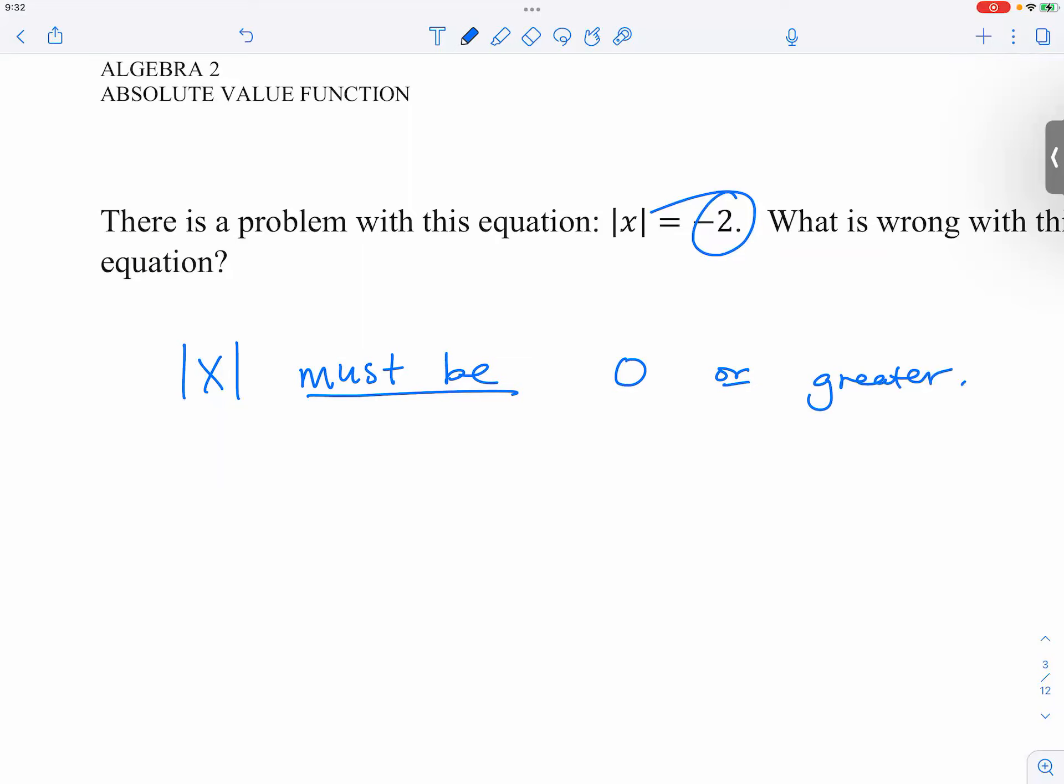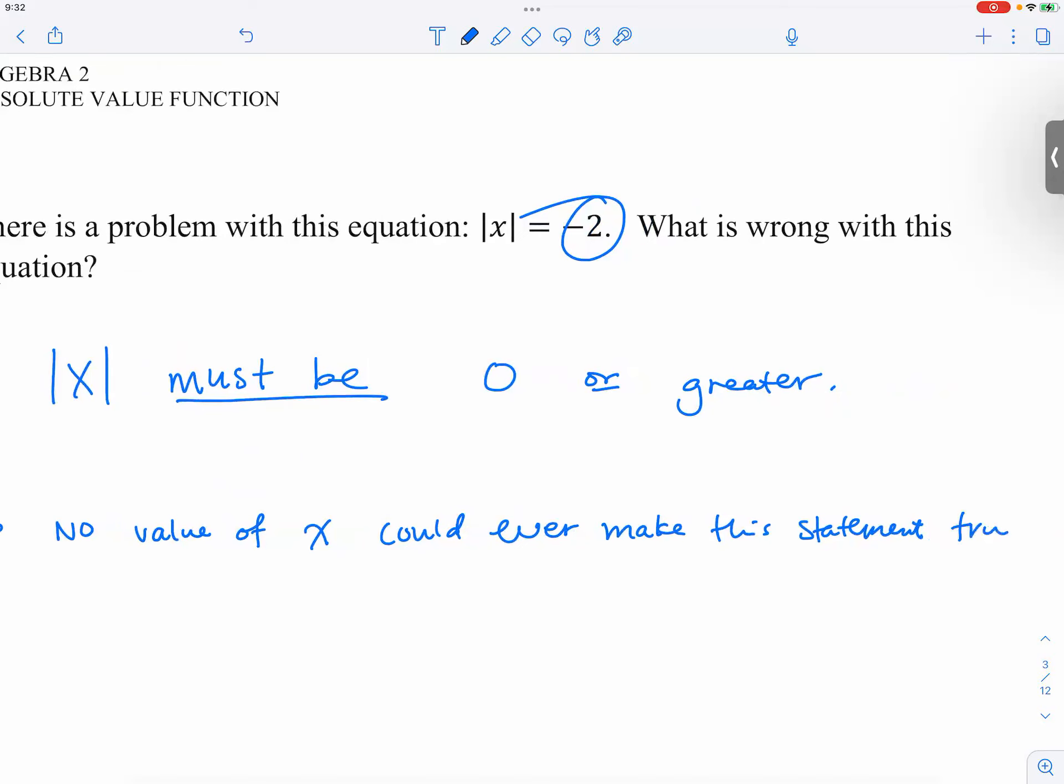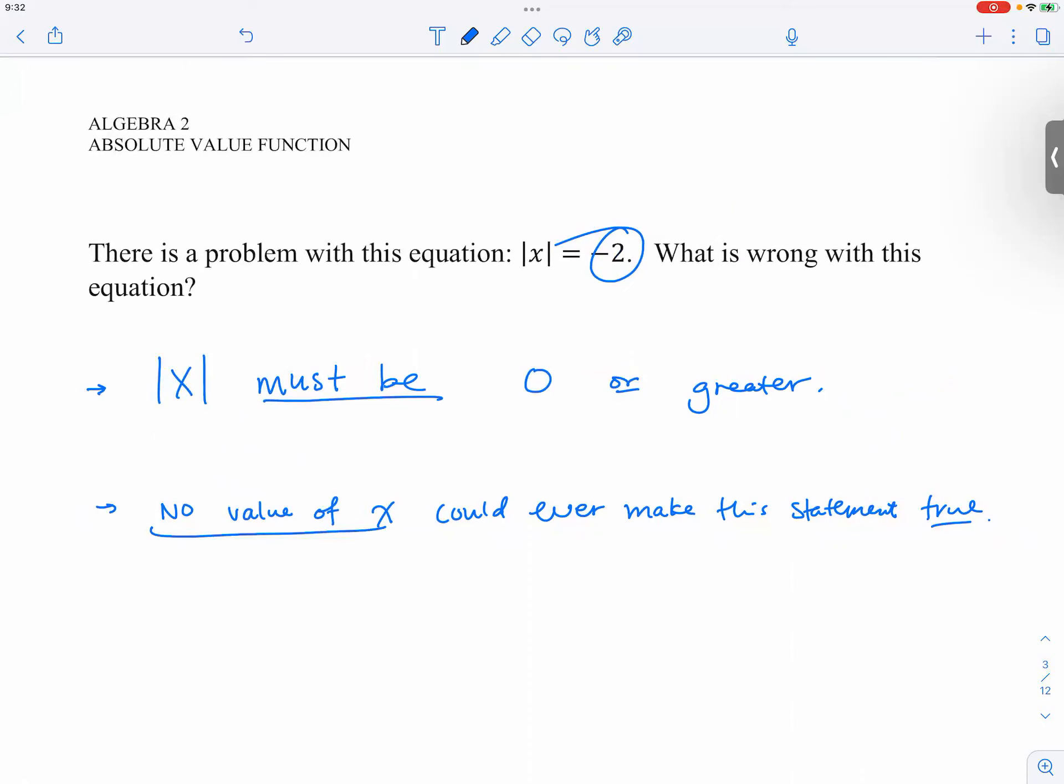Can everyone see why it has to be zero or greater? We can also make another statement. We can say, well in this case, no value of x could ever make this statement true. No value of x, whatever you try to put in here, think of all possible values that you can come up with, none of those would make this statement true.